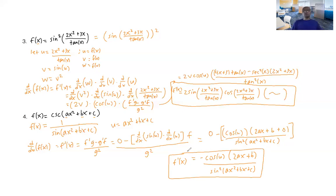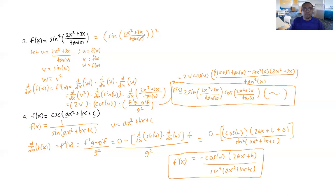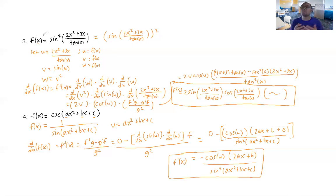Those were the four problems covering the chain rule. The strategy: locate your innermost function and give it a variable, go out one layer and give that a variable, continue until you've covered all layers. To apply the chain rule, find the derivative of all assigned variables and multiply them together.